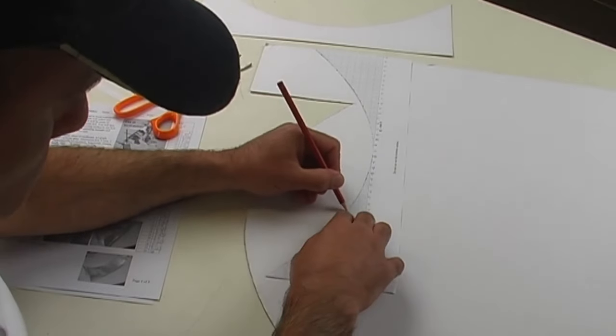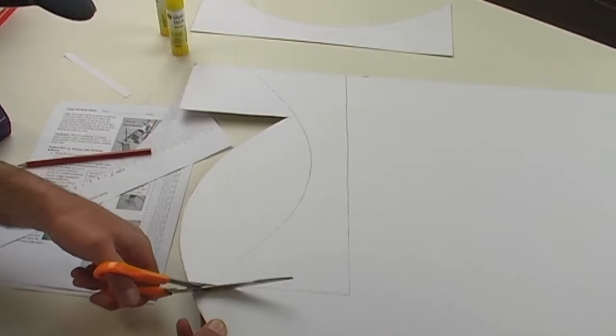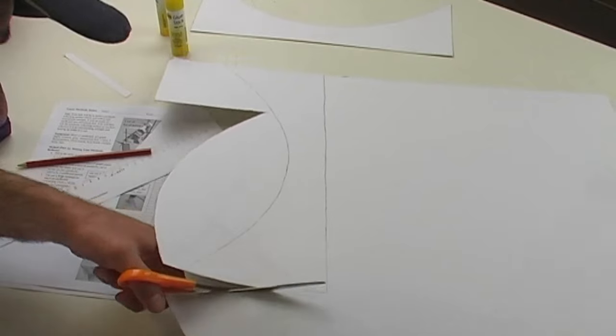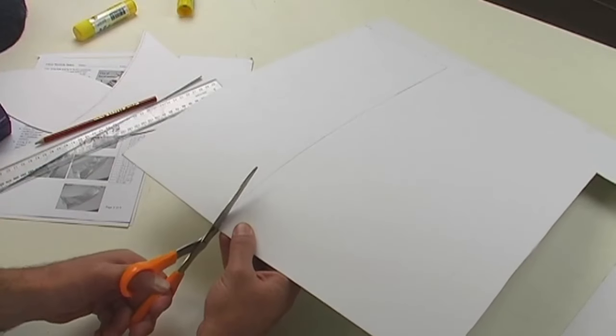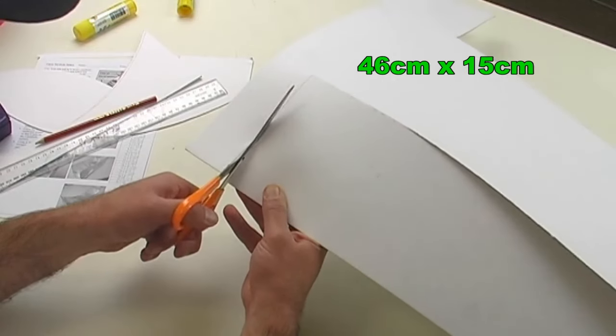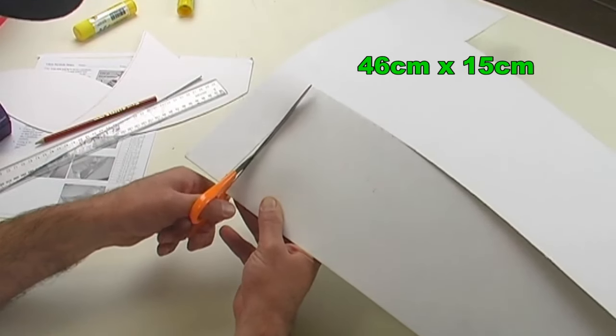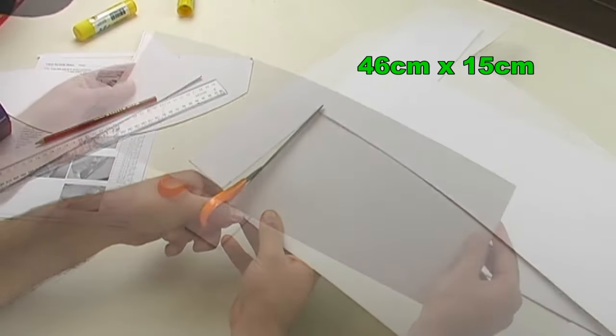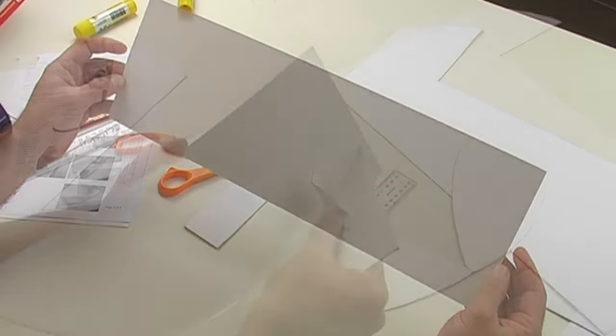Try to use as little card as possible. Next, cut out a large rectangular piece of card, measuring forty-six centimeters by fifteen centimeters. This piece of card will eventually be covered with aluminum foil to become the reflecting surface.